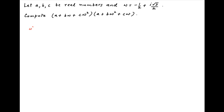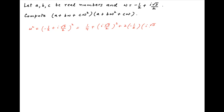We start by evaluating omega square. This is equal to minus half plus i times root 3 upon 2, whole square, which is equal to 1 upon 4 plus i times root 3 upon 2 whole square plus 2 times minus half times i times root 3 upon 2.